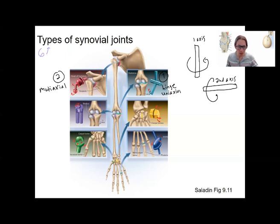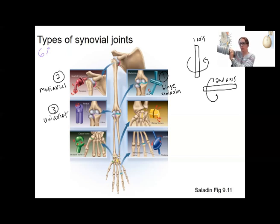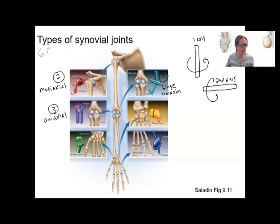There's also one more uniaxial joint: the pivot joint. It is able to pivot — two things rotating but in one plane. That rotation is different from the ball-and-socket rotation your shoulder can do, which is in multiple planes — this is just one plane. Examples are your atlas and axis at the top of the neck, C1 and C2, and there's also one in your arm that allows you to rotate your forearm. This is a uniaxial pivot joint.